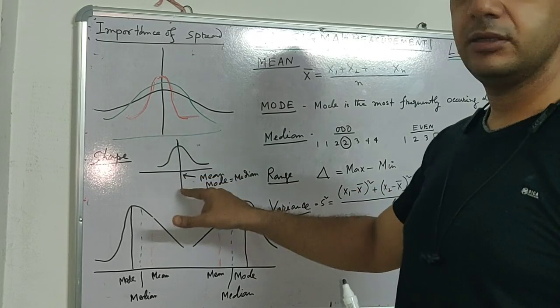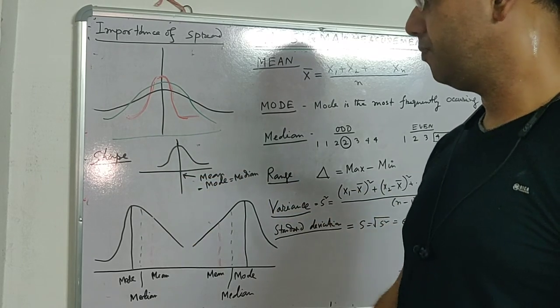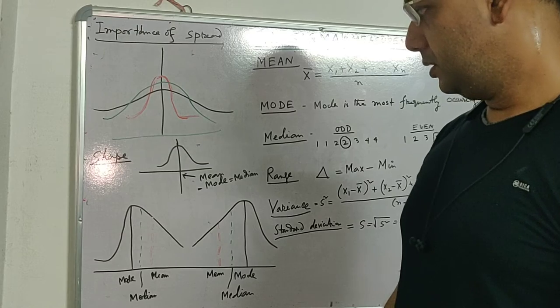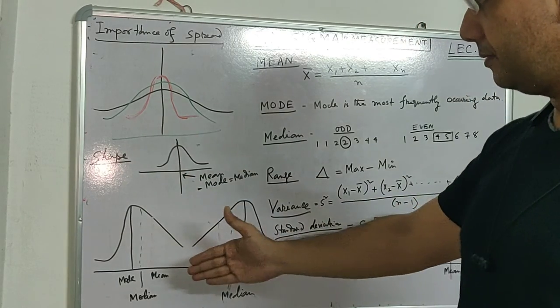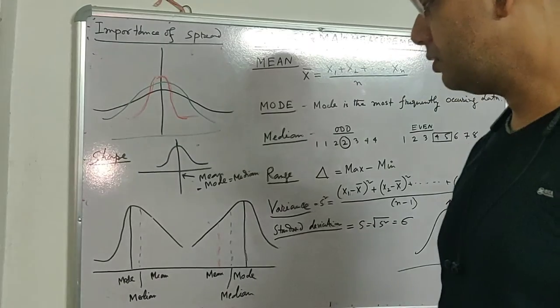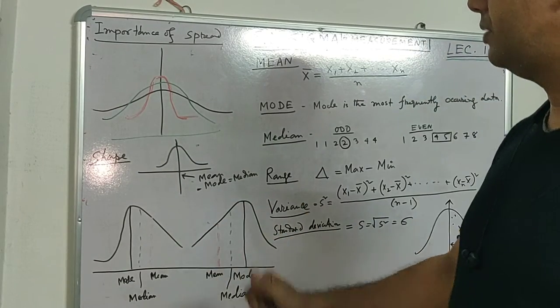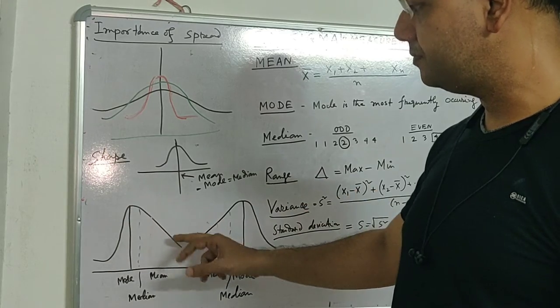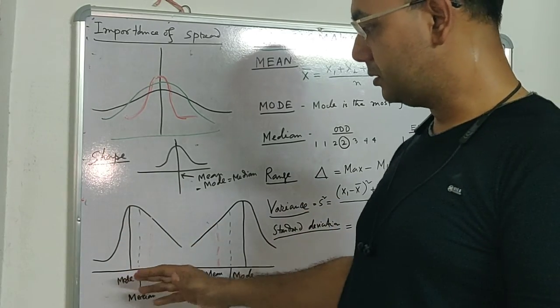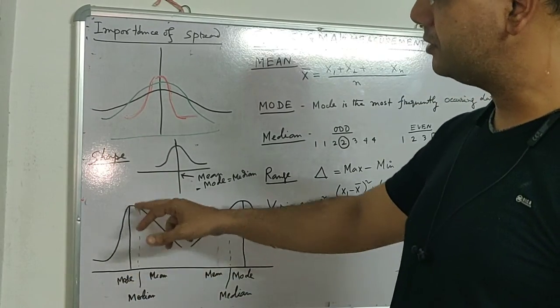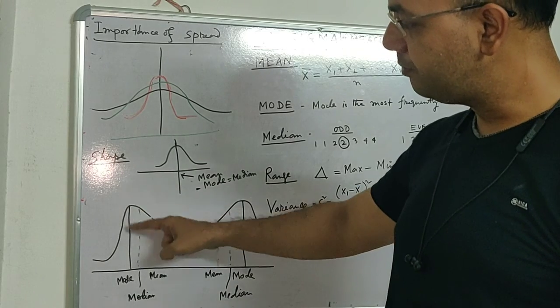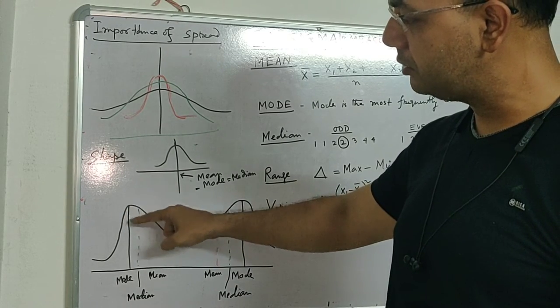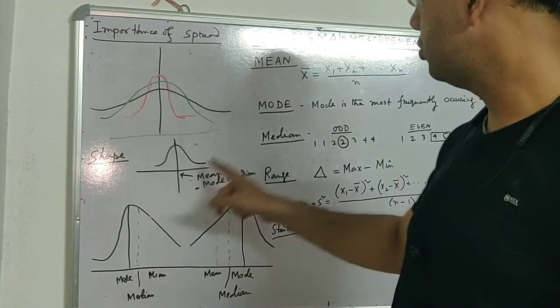For a normal distribution, mean, mode, and median will be along the target—everything will be the same. Another is if there is a deviation of shape—it's not symmetrical—then how will mean, mode, and median be placed? Maximum data points are along here—this is the mode point.